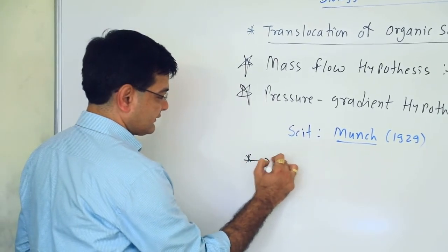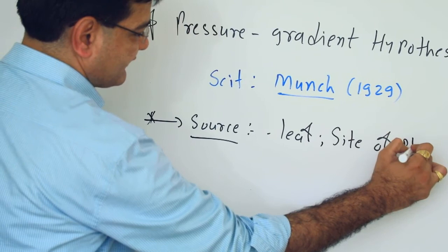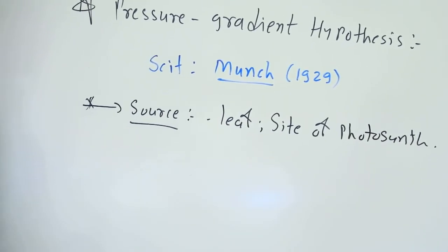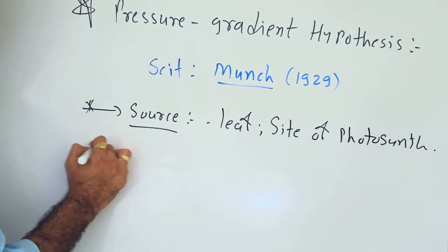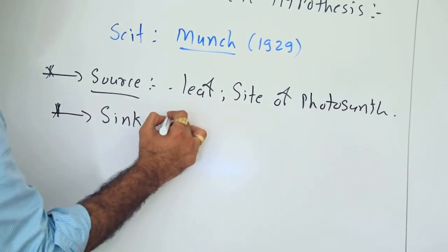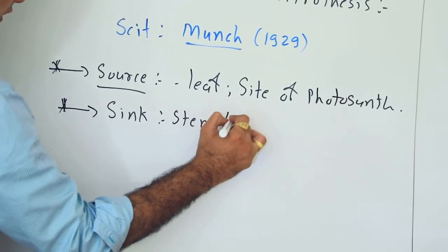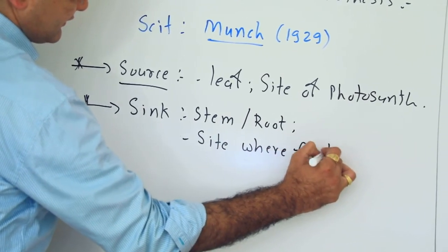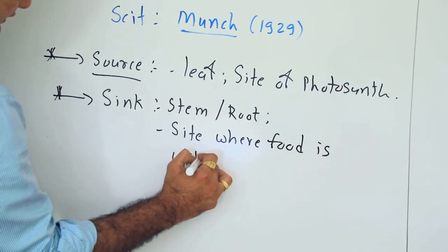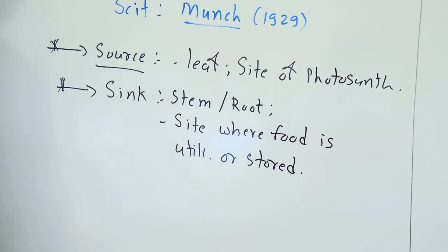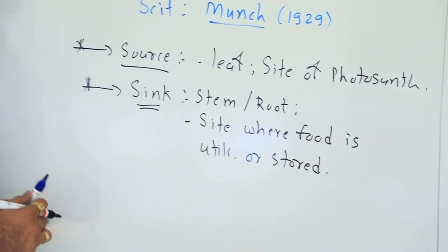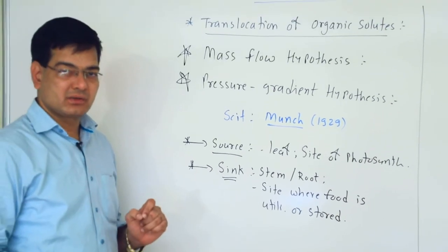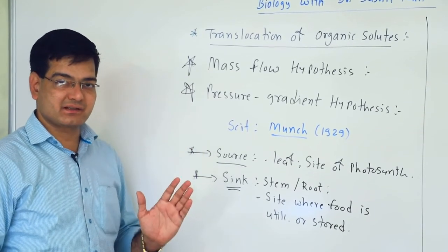The leaf is the site of photosynthesis and is therefore considered the source of organic solutes. The sink is the stem or root — it is the site where food is utilized or stored. So movement of food always occurs from source to sink. Another important thing: we are talking about the transport of organic solutes, simply the food which is synthesized in the plant body.